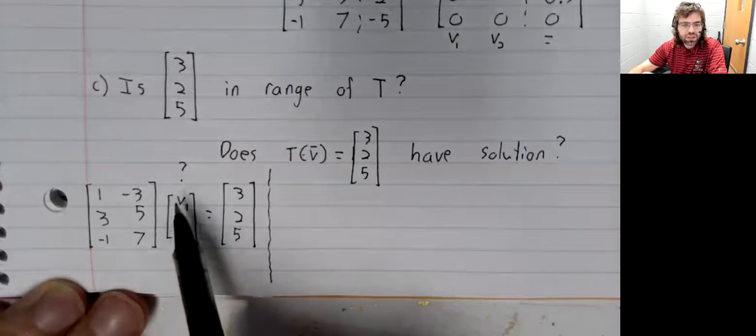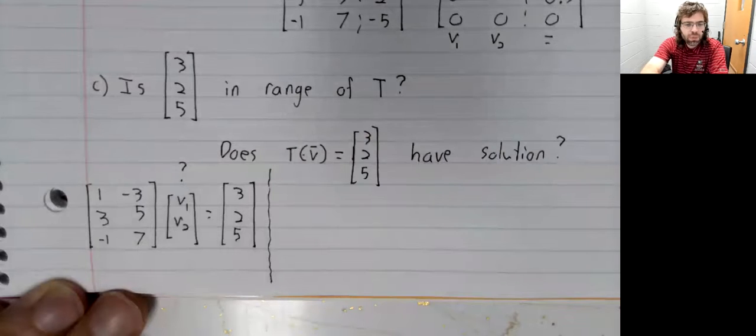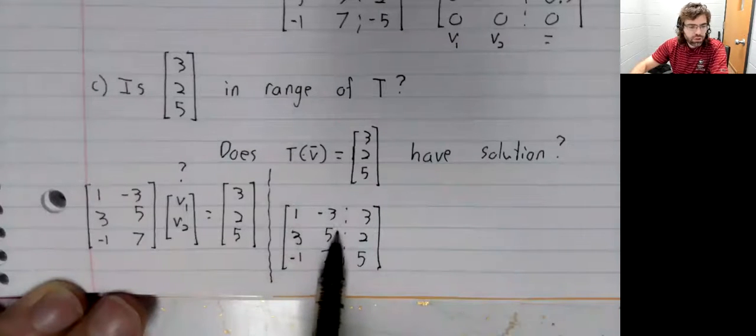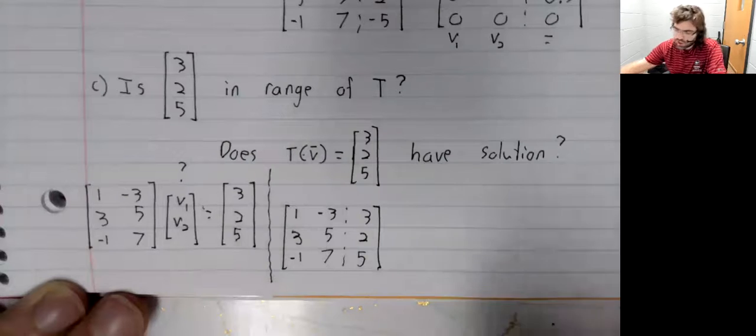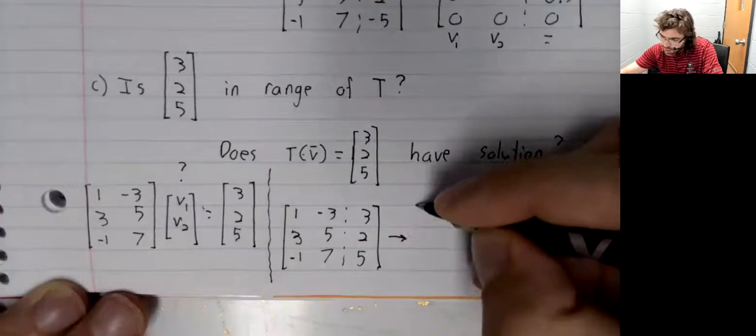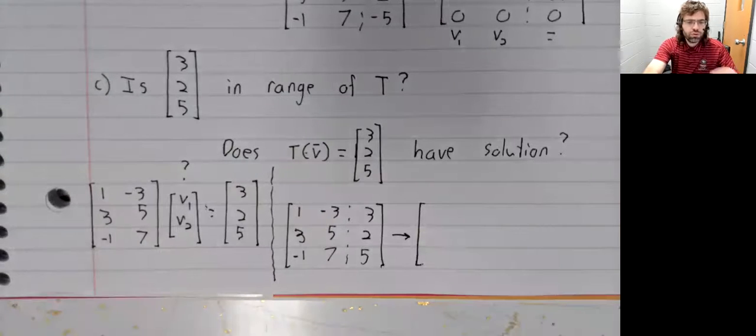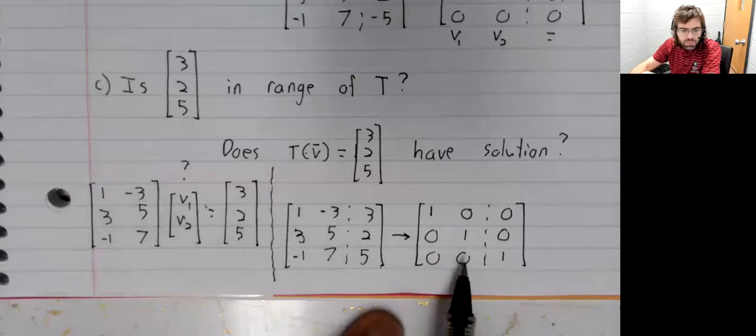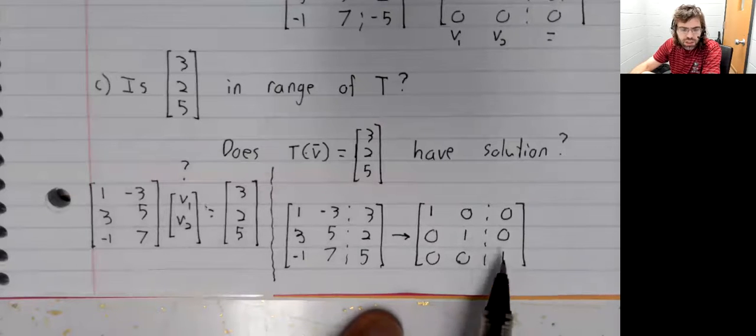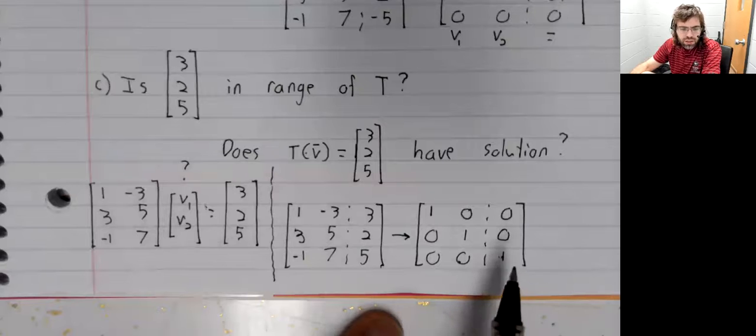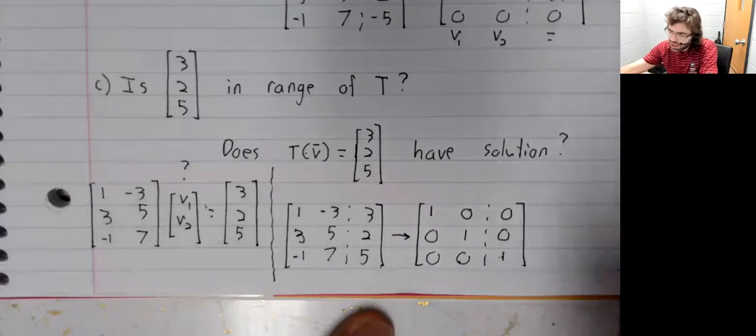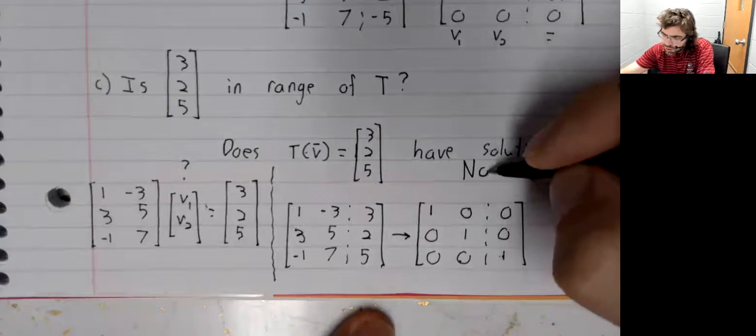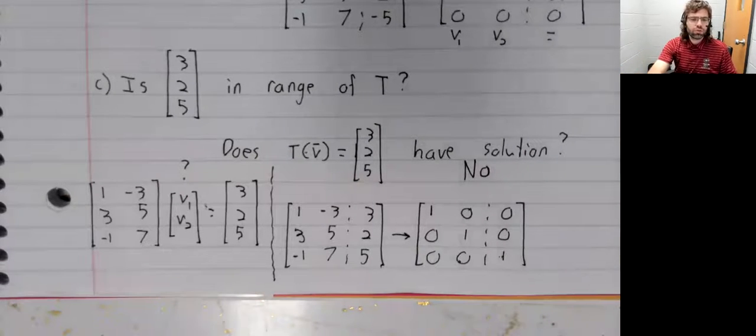To answer that question, we'll just try to find v₁, v₂ and see what happens. We will perform the Gauss-Jordan elimination required to solve this equation. When we do, we get 0·v₁ + 0·v₂ = 1. This pivot in the last column is telling you that there is no solution.